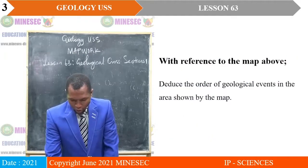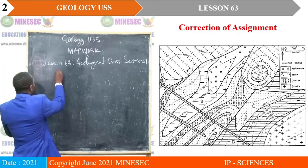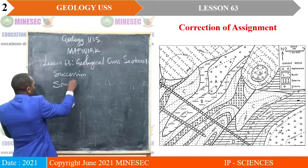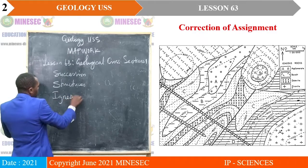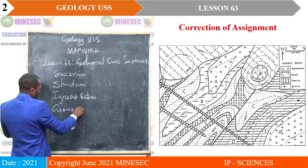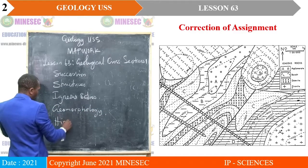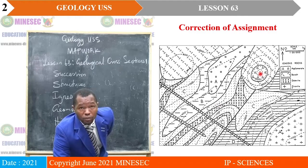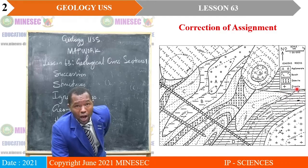If we get back to our map, remember our assessment. Our assessment is always trying to get the succession, then we get the structures, then we get the igneous bodies, then we get the geomorphology, and then we can give the order of events, which is the history. From our map, from the column or the key that is given, it is mostly for igneous rocks.